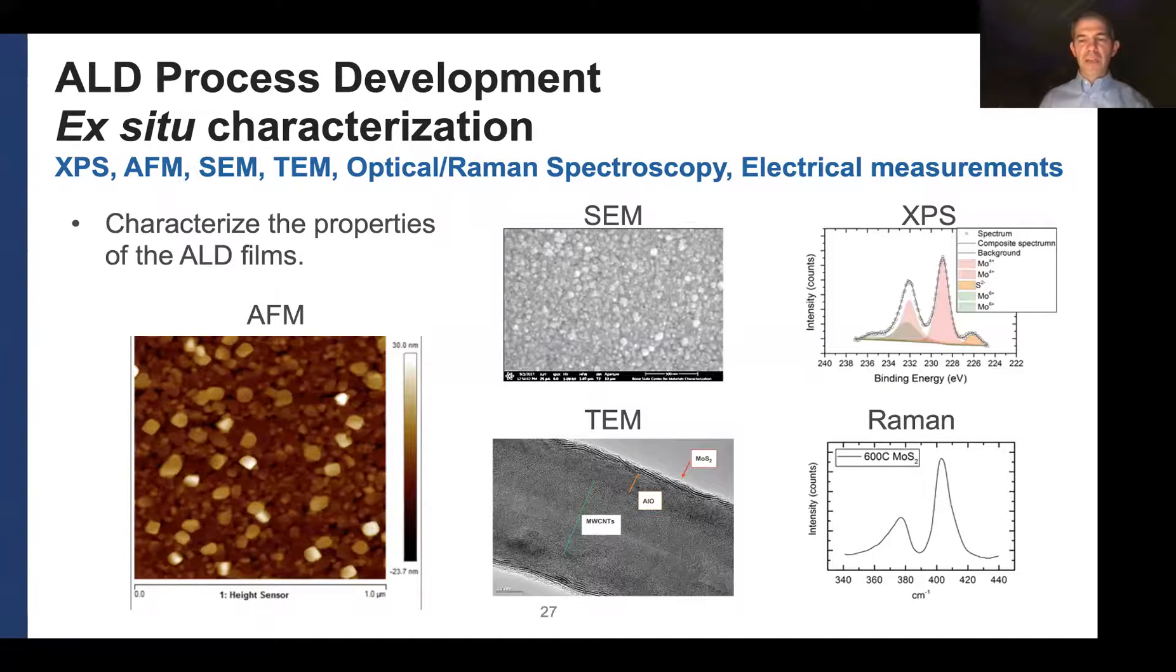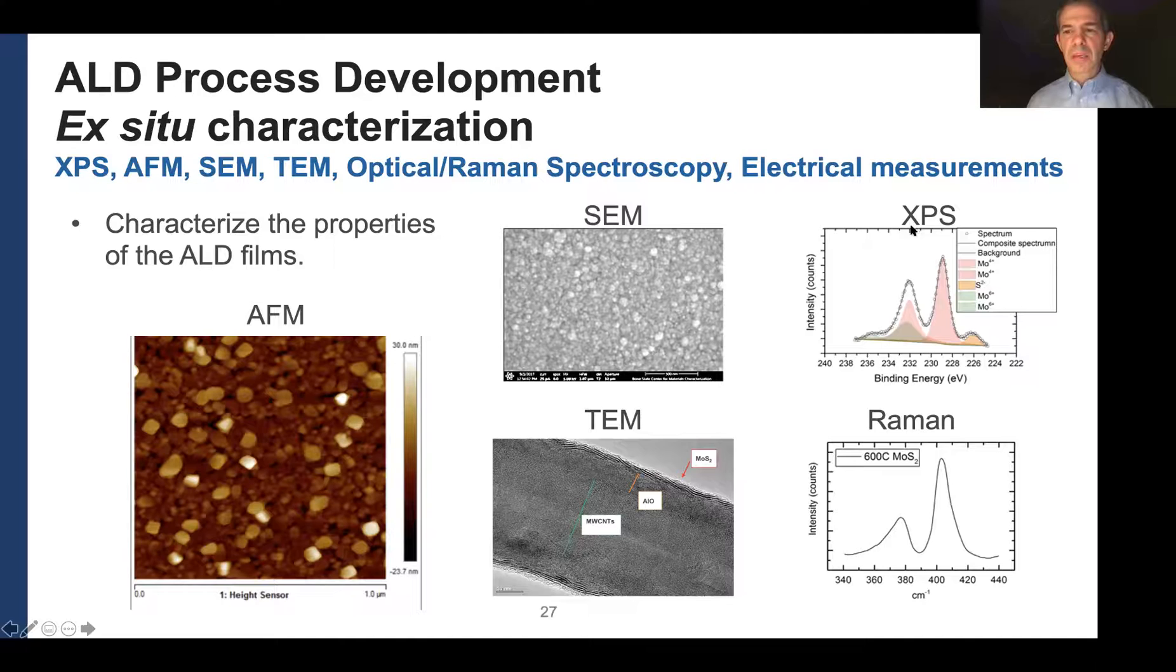Once you have a film, then you like to take your film out of the chamber and do some ex-situ characterization for sanity check. Is there actually a film? What does it look like? So there you use sort of all the classical ex-situ characterization tools. So XPS, Raman spectroscopy, scanning electron microscopy, TEM, and AFM. So these are the sort of the main tools that we're using.